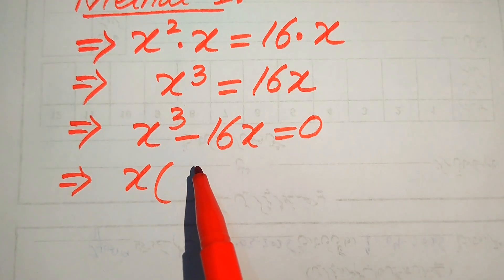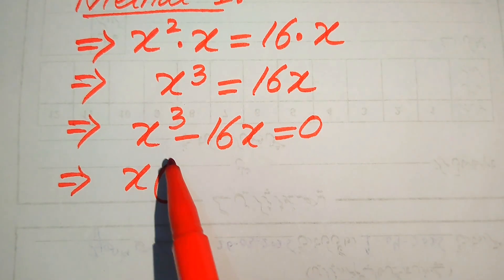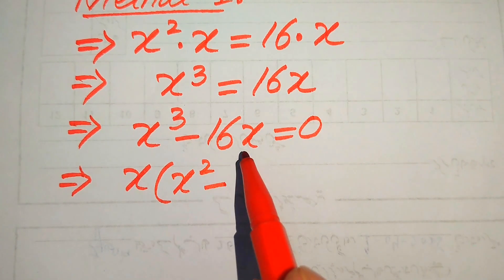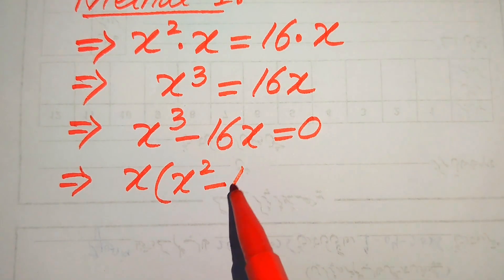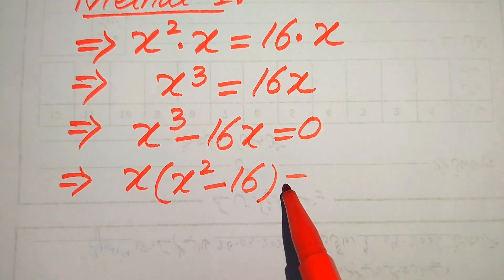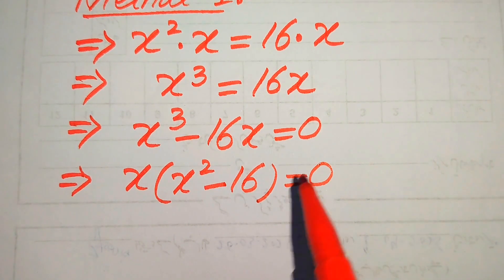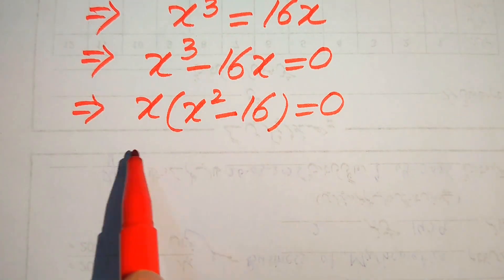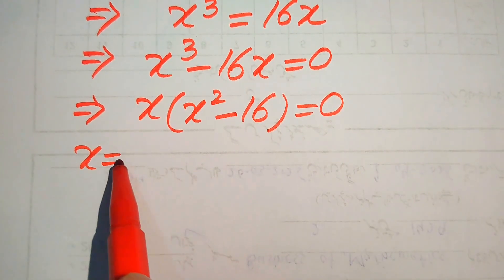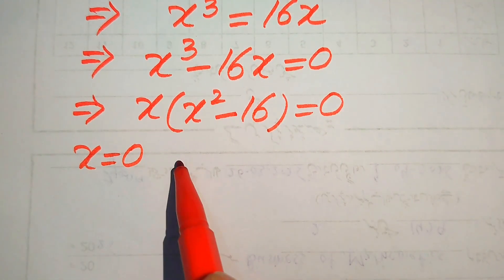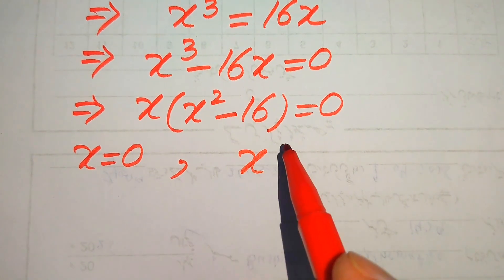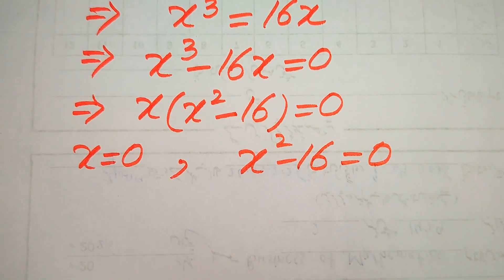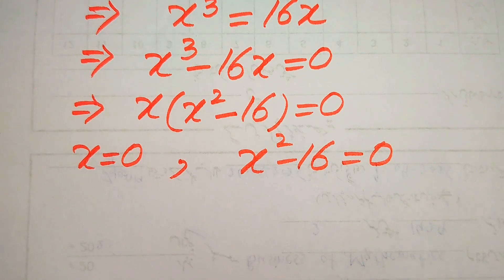Both terms involve x, so we take x as a common factor. Factoring out x gives us x times (x squared minus 16) equals 0. We split this into two cases: the first case is x equals 0, and the second case is x squared minus 16 equals 0.